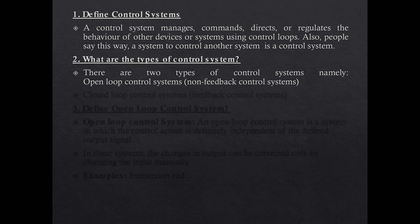What are the types of control systems? There are two types: open loop control system and closed loop control system. Open loop control systems are normally regarded as non-feedback control systems, whereas closed loop control systems are regarded as feedback control systems. So there are two types — open loop and closed loop.